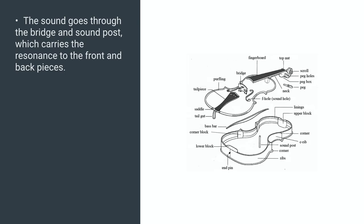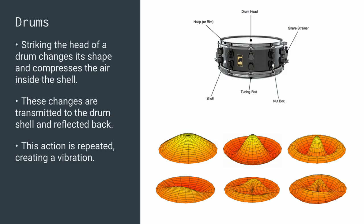We either excite those strings with a bow that creates friction and makes them vibrate slowly, or we pluck them like a guitar. In the case of a drum, there is a large membrane that is struck. That membrane reacts to the strike and moves in complex ways, as you can see from the diagrams. This creates pressure inside the box that bounces back and forth, and that energy is released from the drum, pushing the air molecules rather violently.